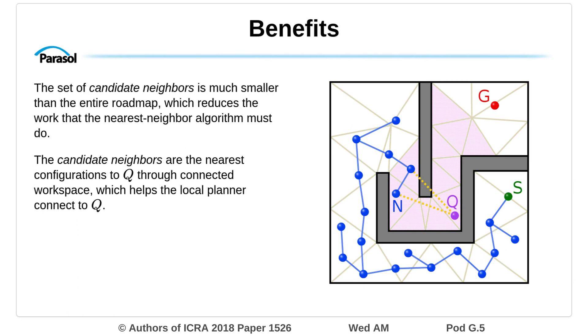The set of candidate neighbors is much smaller than the entire roadmap, which reduces the work that the nearest neighbor algorithm must do. The candidate neighbors are the nearest configurations to Q through connected workspace, which helps the local planner connect to Q.